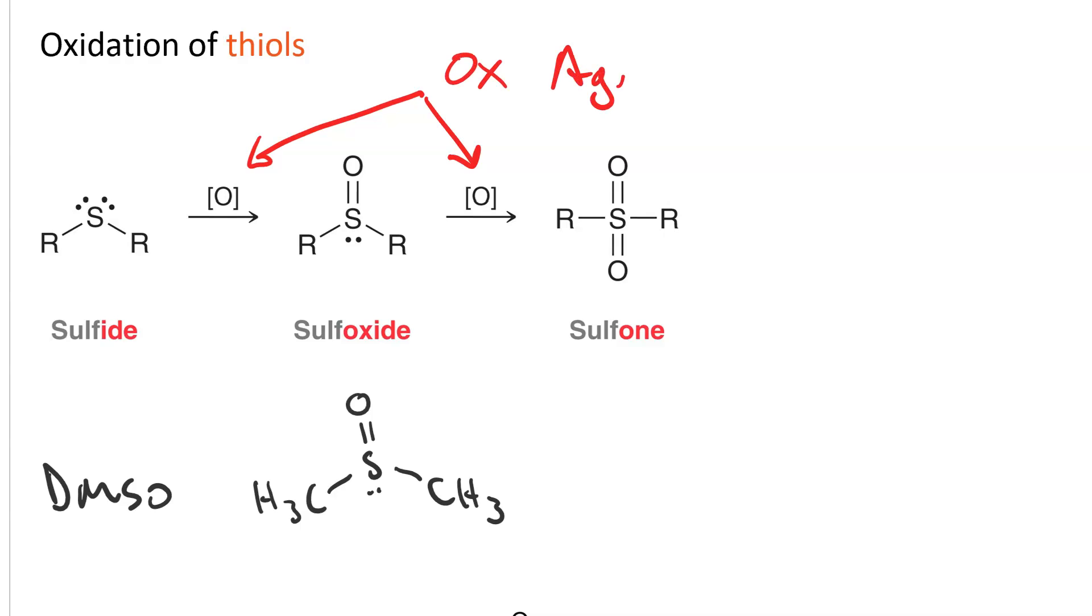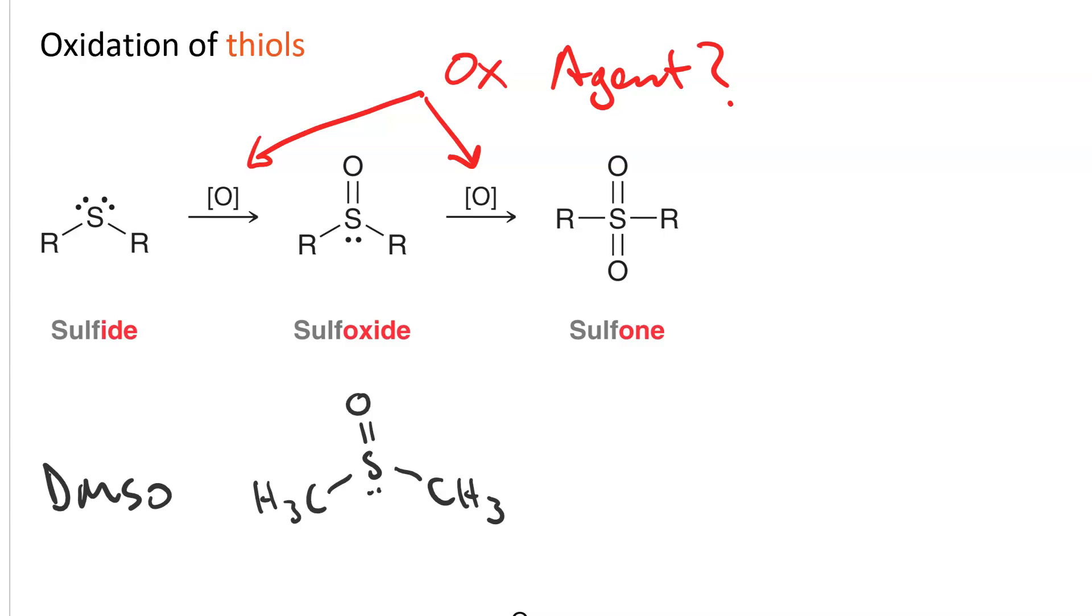What oxidizing agent are we going to use? If you want to just go to a sulfoxide, use sodium metapyriodate. NaIO4. The IO4 minus ion is metapyriodate. That is a more mild oxidizing agent.